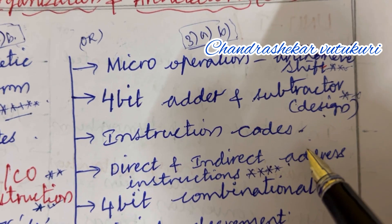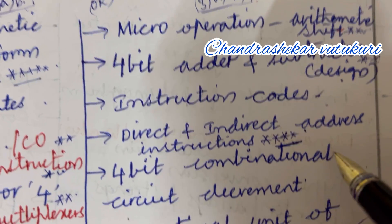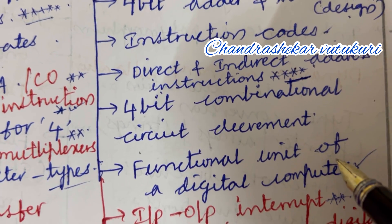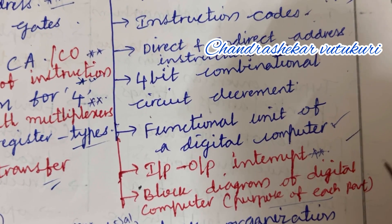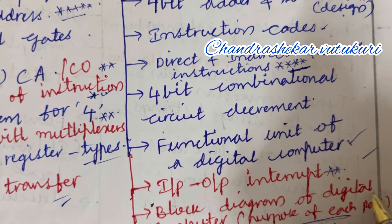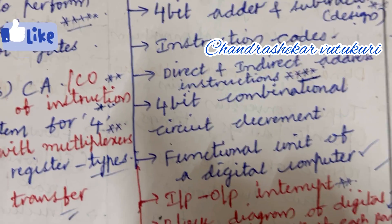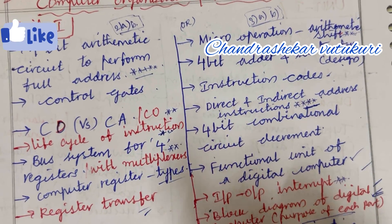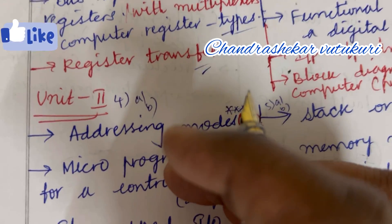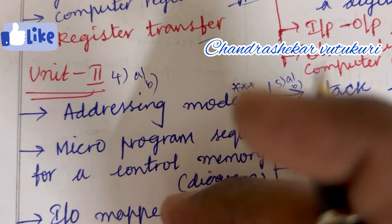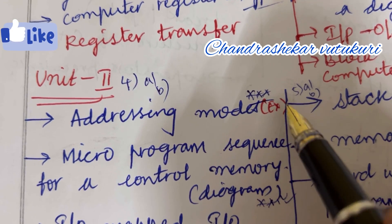Micro operations and arithmetic shift, 4-bit adder and subtractor along with its design is set to be the 3A question. Instruction codes — direct and indirect addressing instructions — may be the topmost question in 3B. 4-bit counter: increment as well as decrement, functional unit of a digital computer, and input-output interface may be the short question. The block diagram of a digital computer and the purpose of each block may be asked — I'm expecting this question for sure this time.